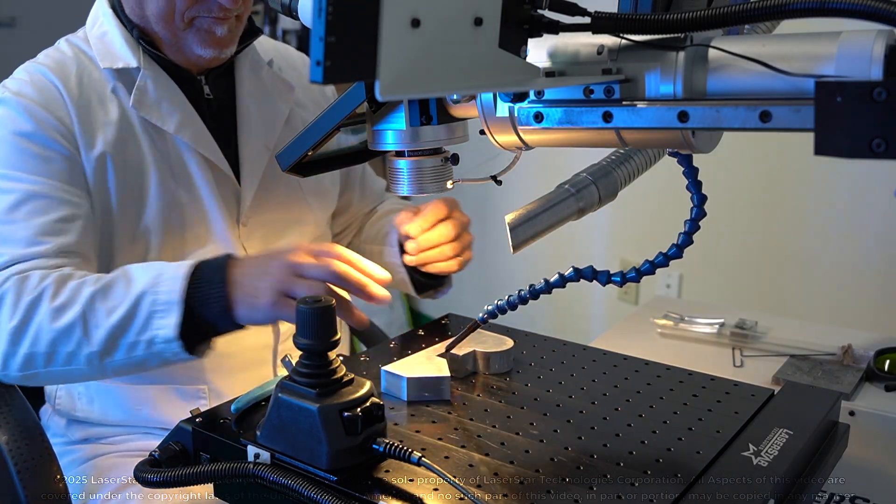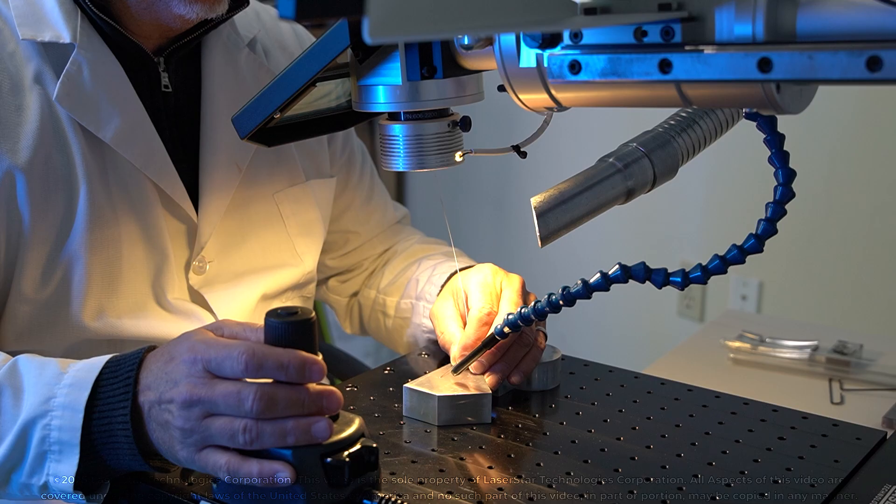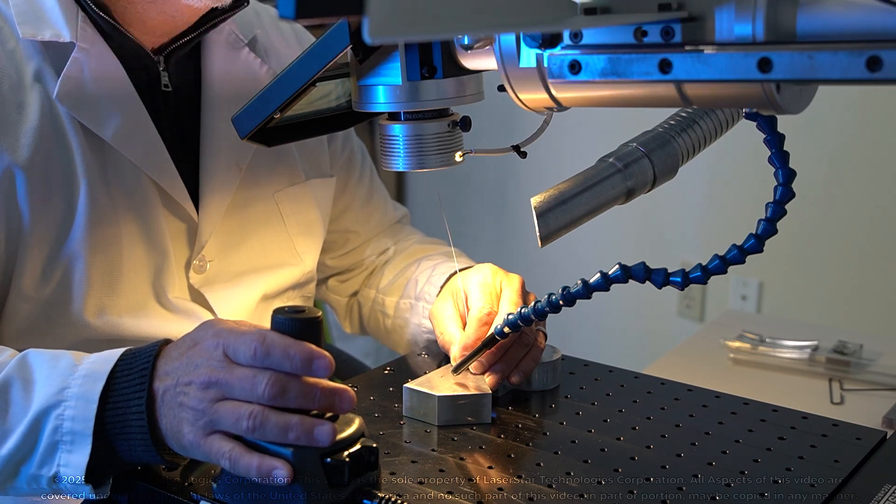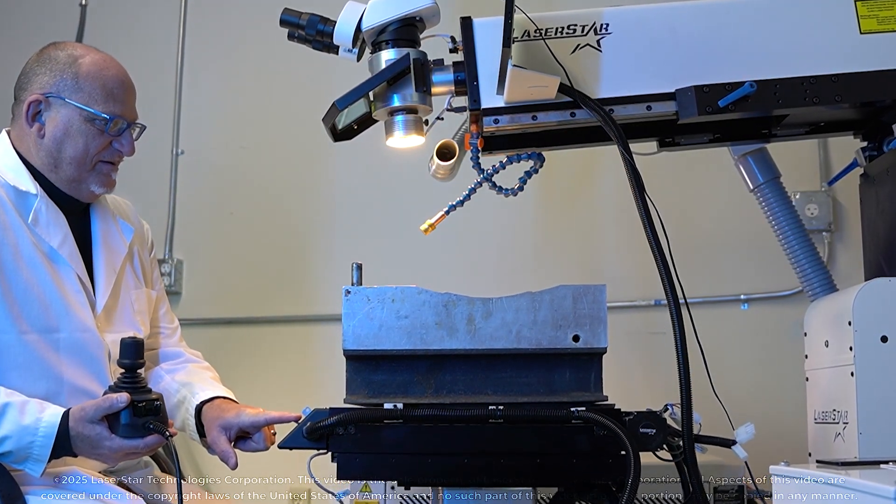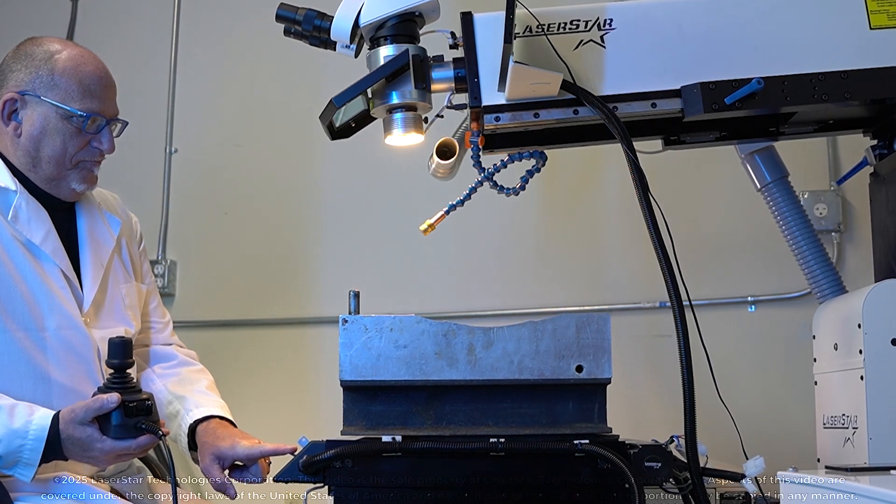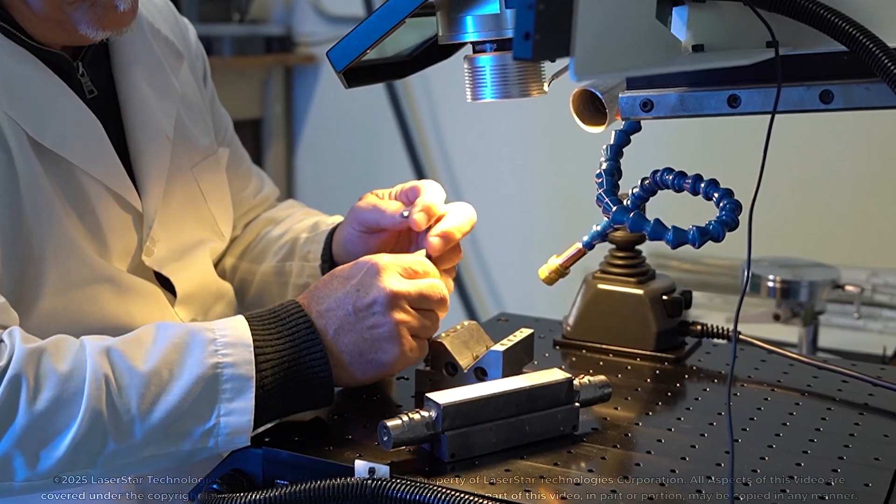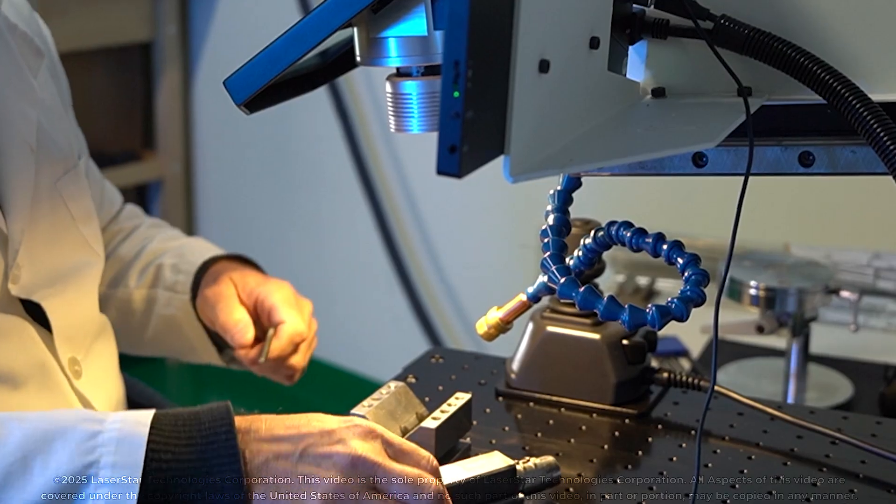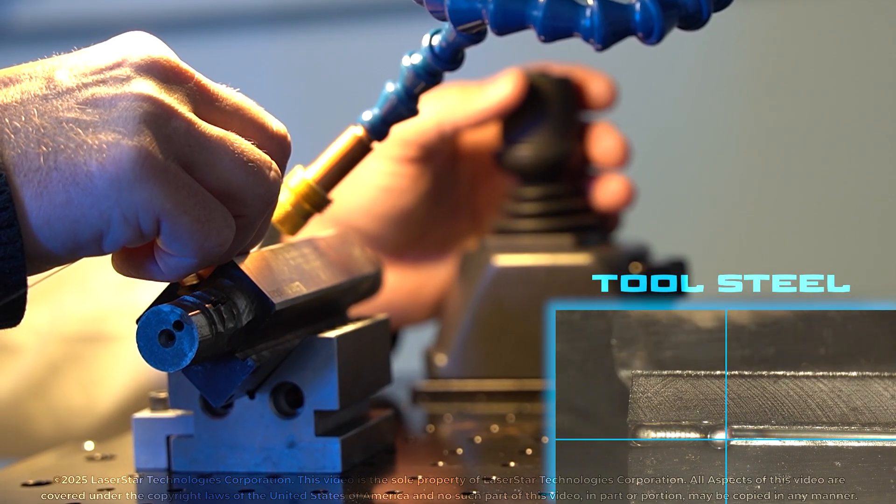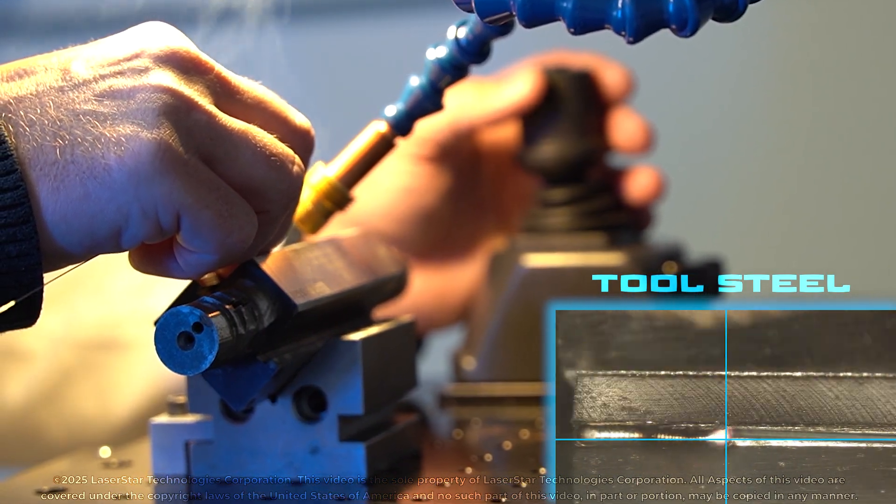The state-of-the-art features built into this machine make it easy to handle parts of all shapes and sizes. The XY motion table yields a maximum weight tolerance up to an impressive 300 pounds and is equipped with M6 threaded tapped holes, allowing the user to quickly secure precision fixtures for repeatable weld results.